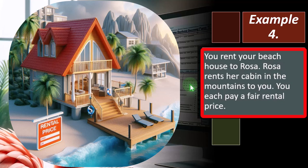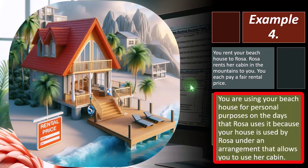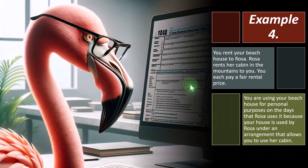Example 4: You rent your beach house to Rosa. Rosa rents her cabin in the mountains to you. This is an exchange situation. You each pay a fair rental price. You are using your beach house for personal purposes on the days Rosa uses it, because your house is used by Rosa under an arrangement that allows you to use her cabin. This quid pro quo exchange still qualifies as personal use — a tricky situation.